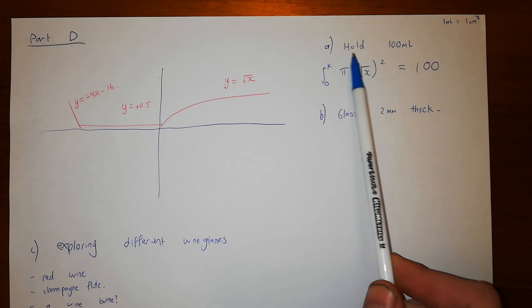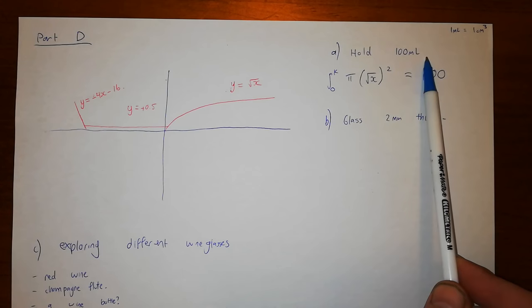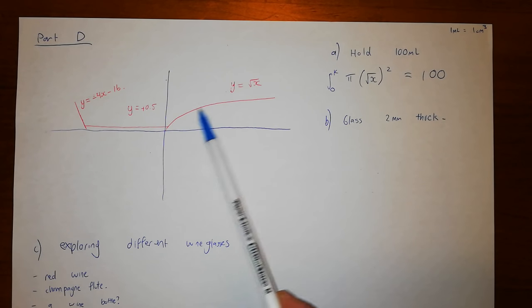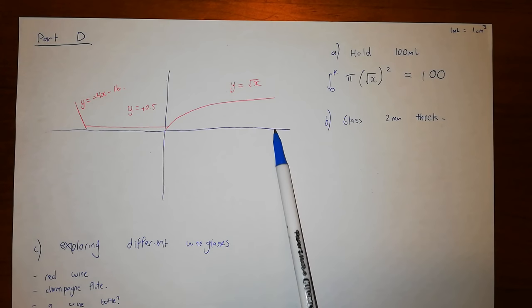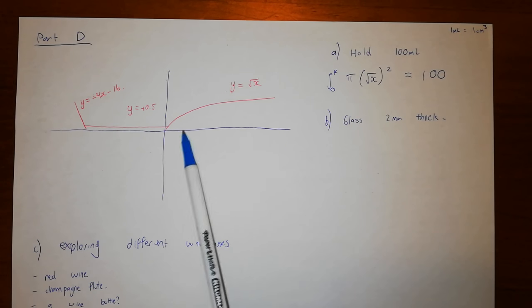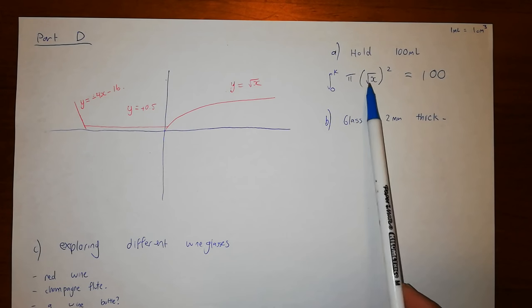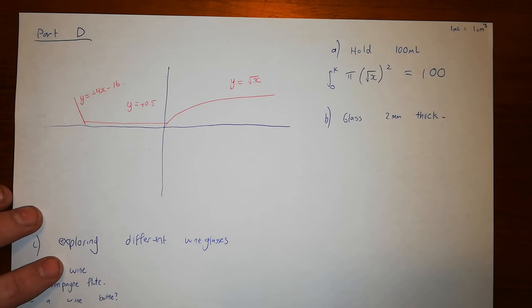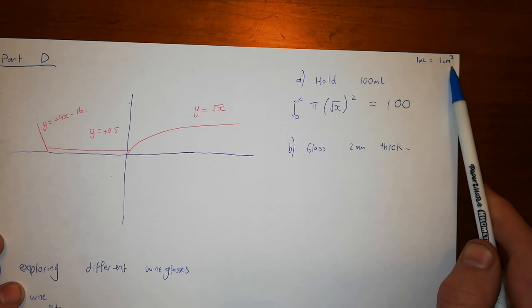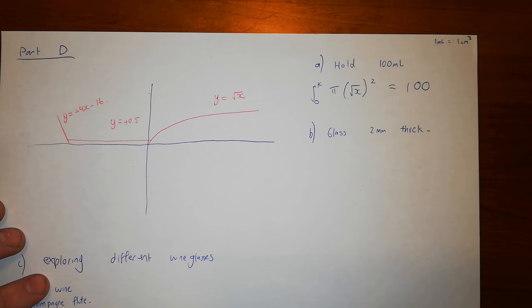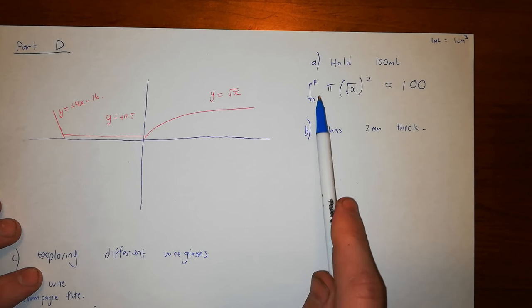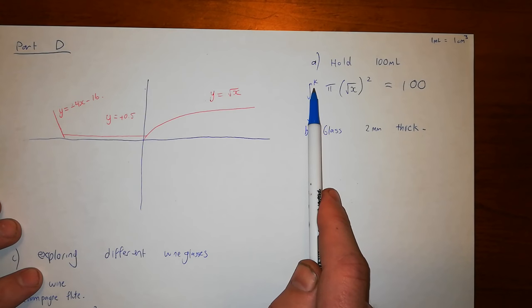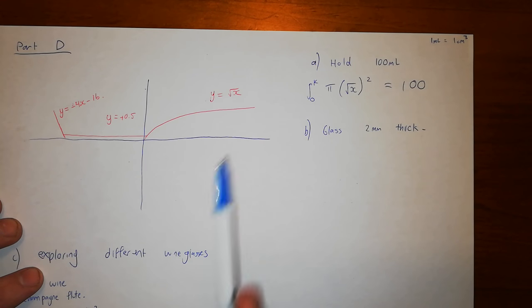So we're told what are the dimensions such that it holds a hundred milliliters. So that means we're going to integrate this function, the square root of x from 0 to k. We're trying to find how high does the bowl need to be so that when we rotate this square root of x function around the x-axis it holds a hundred mils or close to a hundred mils. Now, one milliliter is a centimeter cubed, so all of our numbers here are in terms of centimeters. So this is the calculation you'd be doing: integral from 0 to k of π times the square root of x squared being equal to a hundred. You need to solve that for k. That'll be the value of how high this wine glass is.